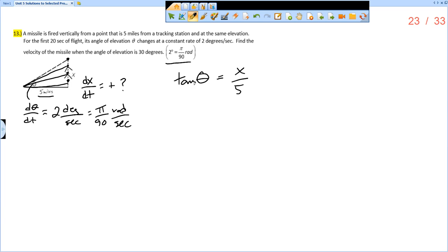So now what we want to do is we want to take the derivative. Or actually, I'm sorry, our find statement. So we want to find what? So we're told to find the velocity. So dx dt when what is true? When theta is 30 degrees, or you recall that 30 degrees is also pi over 6.